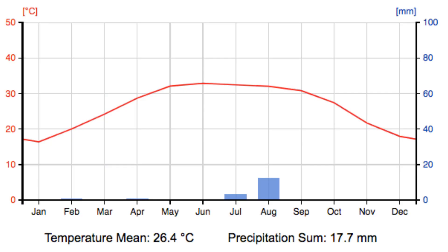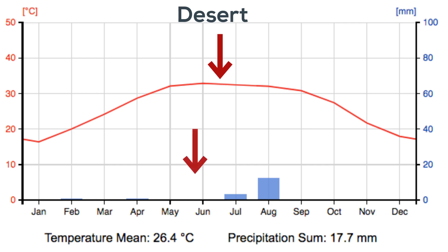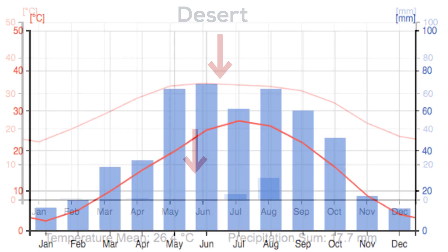Up first is a desert. This desert is pretty easy to recognize. The temperatures are either warm or hot, and they don't fluctuate a lot during the year. But mainly take a look at the rainfall — there is very little or no rainfall throughout the year.